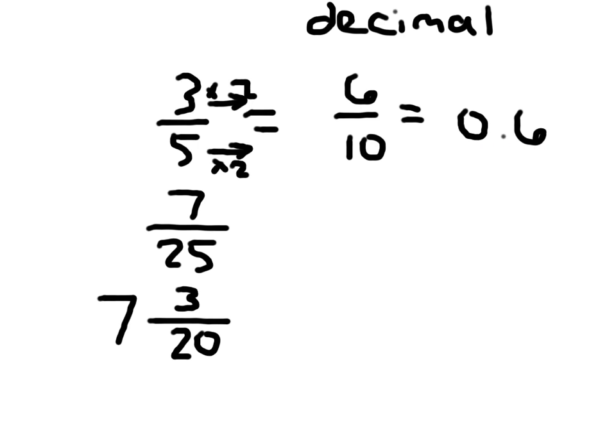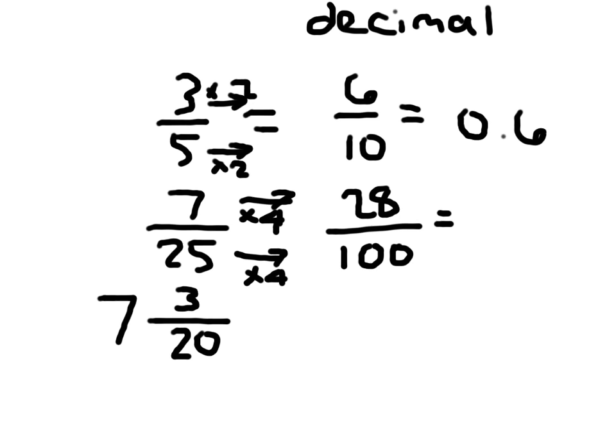Same thing here. 7 twenty-fifths. In this case, I can't go to 10. I know that. But I can go to 100. I know that 25 times 4 is 100. If I multiply the denominator by that, what do I have to multiply the numerator by? Right. 4. 7 times 4 is 28. And then, what is it I'm going to write here? I'll write a 0 again. 0.28.